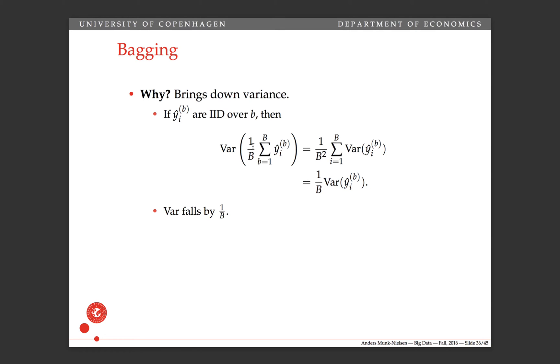Then the variance of this average prediction here. First off, this is a constant, so we can take that outside the variance operator if we square it. So that's done here. Secondly, the variance of a sum of stochastic variables is equal to the sum of the variances. Because generally, the variance of a sum is equal to the sum of variances plus two times the sum of covariances. So when the covariances are zero, because it's IID, so we have the sum of these variances.